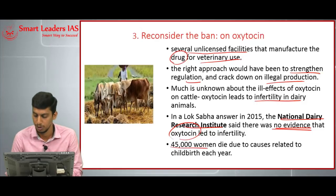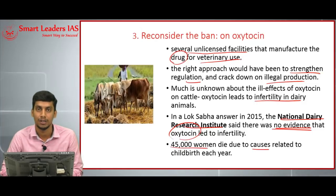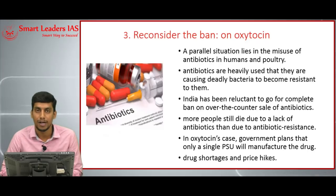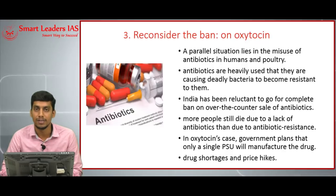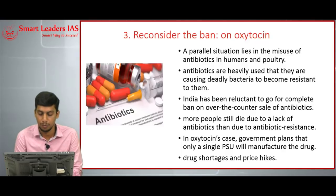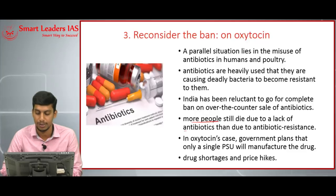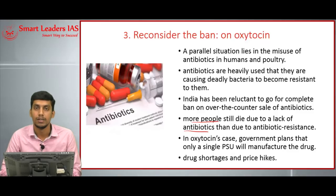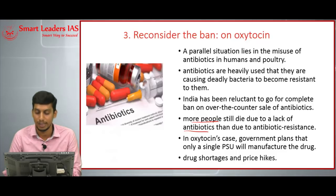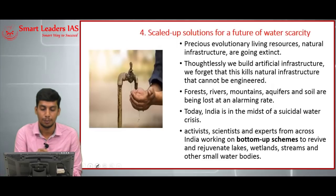The government's decision to ban oxytocin is not acceptable because 45,000 women die due to causes related to childbirth each year, and oxytocin is needed to prevent this. Antibiotics are used indiscriminately by people, but the government is not going to ban them — because in India, especially in rural India, more people still die due to lack of antibiotics than from their misuse. In this case, the government has decided that only one PSU will manufacture this drug, which will lead to drug shortages and increased prices.